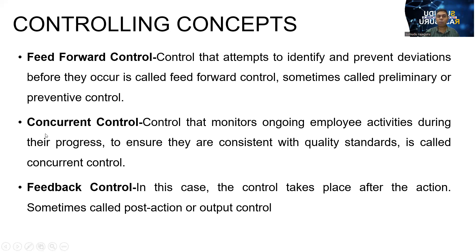When we talk about concurrent control: control that monitors ongoing employee activities during their progress. That means when we are doing the job, during the work, we have to do some control activities to ensure they are consistent with quality standards — that is called concurrent control. Most of the time when we talk about manufacturing, concurrent control activities are done to maintain quality control.